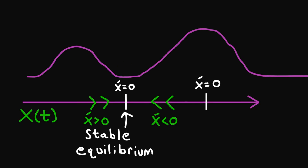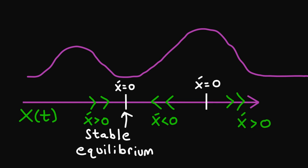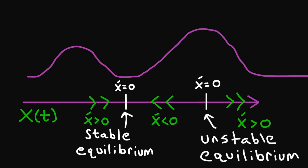Let's remove the ball and balance it at the top of the hill again. This time we'll nudge the ball to the right. Nudging to the right causes the ball to keep rolling away to the right. Let's include some arrows on the horizontal axis: since moving to the right means x of t is increasing, in this region x prime of t is greater than zero. We call this an unstable equilibrium — equilibrium because if we balance the ball at the top it will stay there, but unstable because if we nudge it a little to the left or right, it runs away.